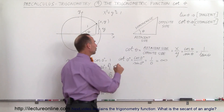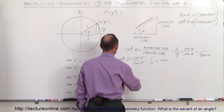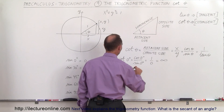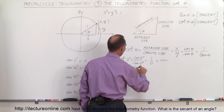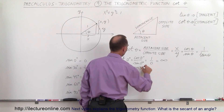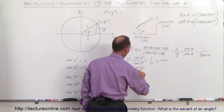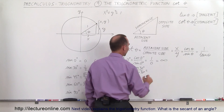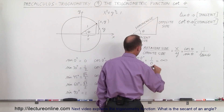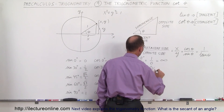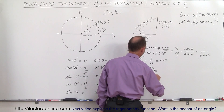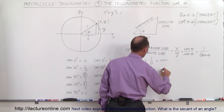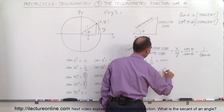The cotangent of 30 degrees is equal to the cosine of 30 degrees divided by the sine of 30 degrees, which is the square root of 3 over 2 divided by 1 half, which equals the square root of 3.